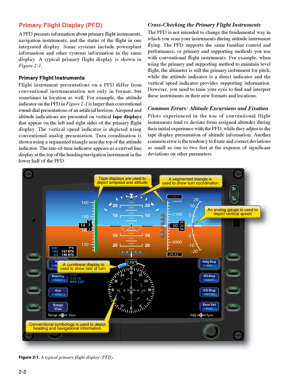For example, when using the primary and supporting method to maintain level flight, the altimeter is still the primary instrument for pitch, while the attitude indicator is a direct indicator and the vertical speed indicator provides supporting information. However, you need to train your eyes to find and interpret these instruments in their new formats and locations.